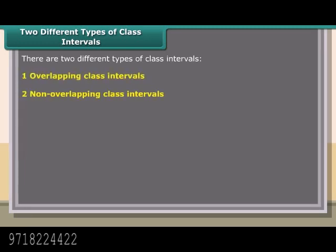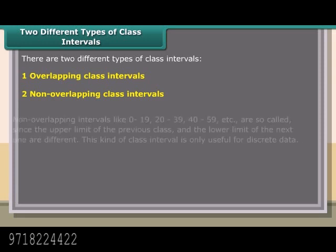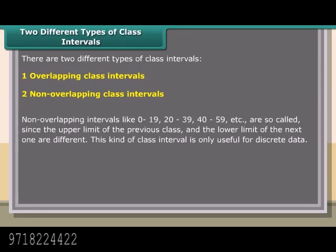Non-overlapping intervals like 0 to 19, 20 to 39, 40 to 59, etc. are so called since the upper limit of the previous class and the lower limit of the next one are different. This kind of class interval is only useful for discrete data.